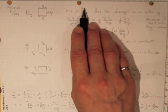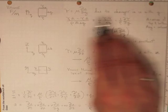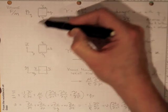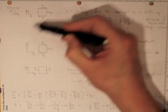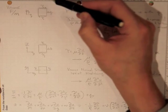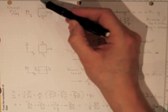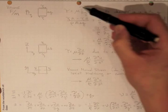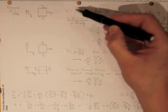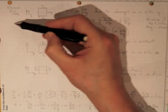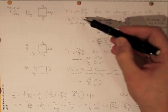The shear stress will be mu di u di y due to changes in u with y. So if there's a velocity gradient in this direction, if the velocity is higher on top than it is on the bottom, then the fluid up here is pulling our little element this way and the fluid down here is going more slowly and it's pulling our little element back that way.